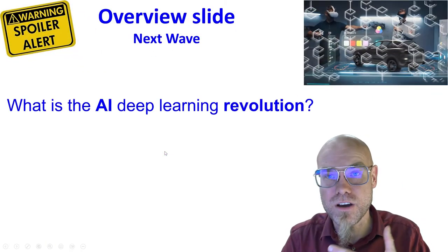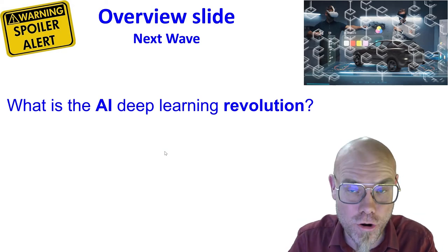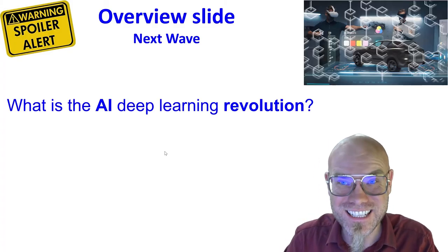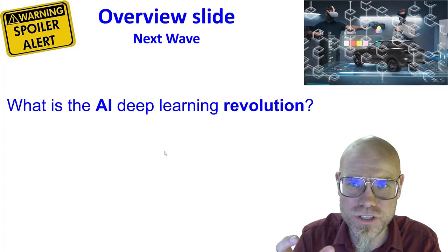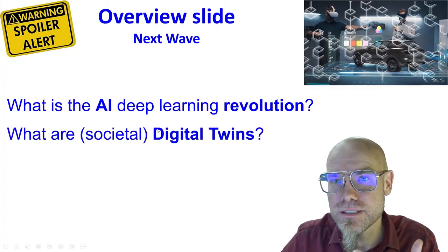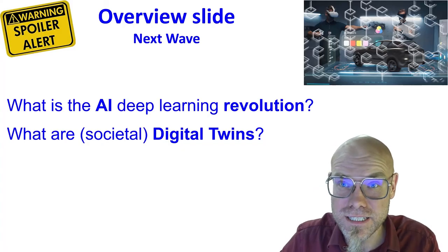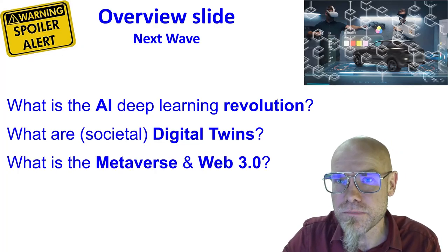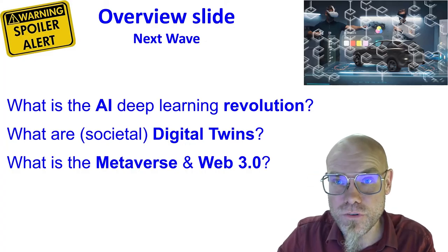So we start with the other way around. We start with AI and deep learning and transformer deep learning. So we go into that and what it is and what it does and what it is not and what it does not do. How does this machine learning actually happen? Then we go towards the three-dimensional representation of reality with digital twins and societal digital twins. And these simulations that we have ongoing, which some people refer to as the metaverse or web 3.0.